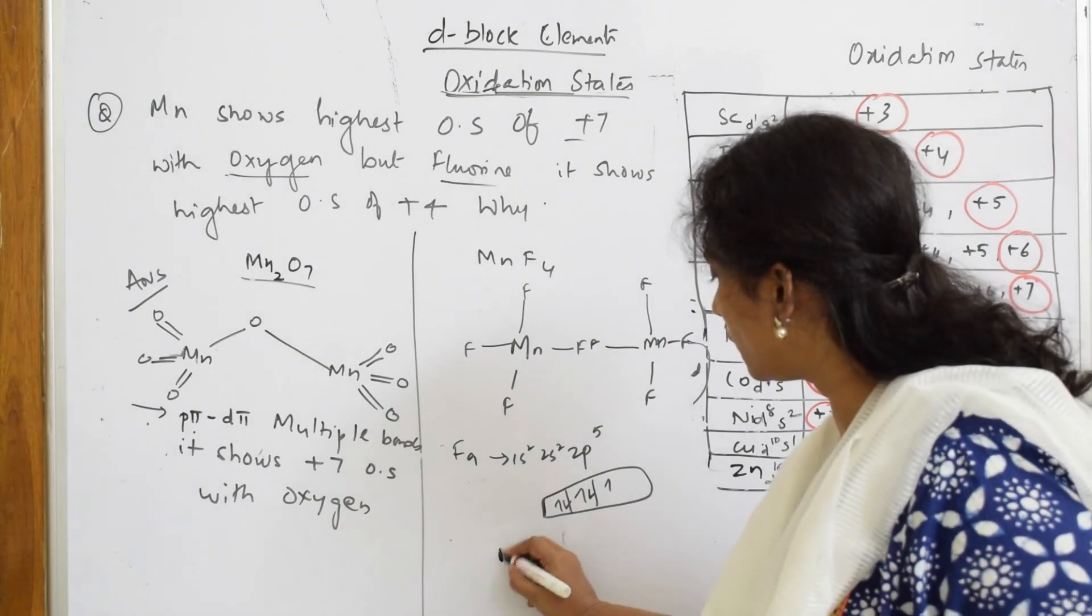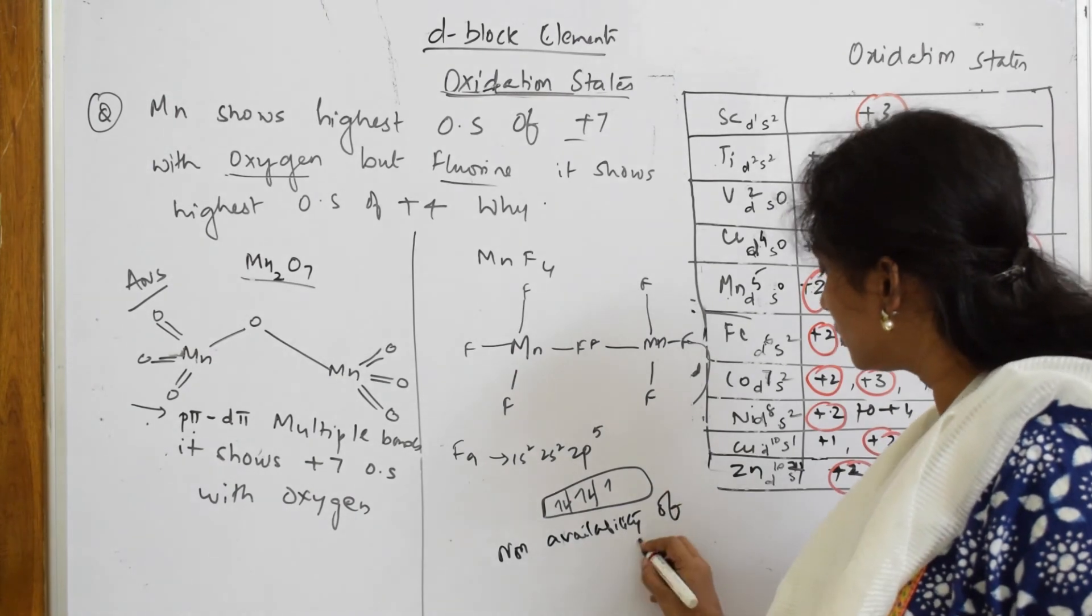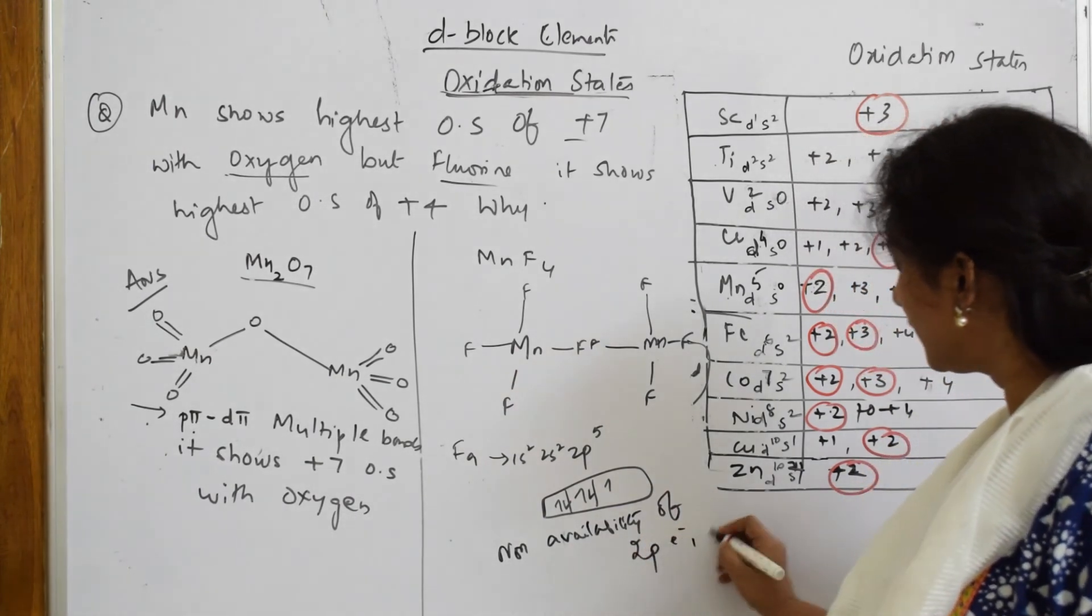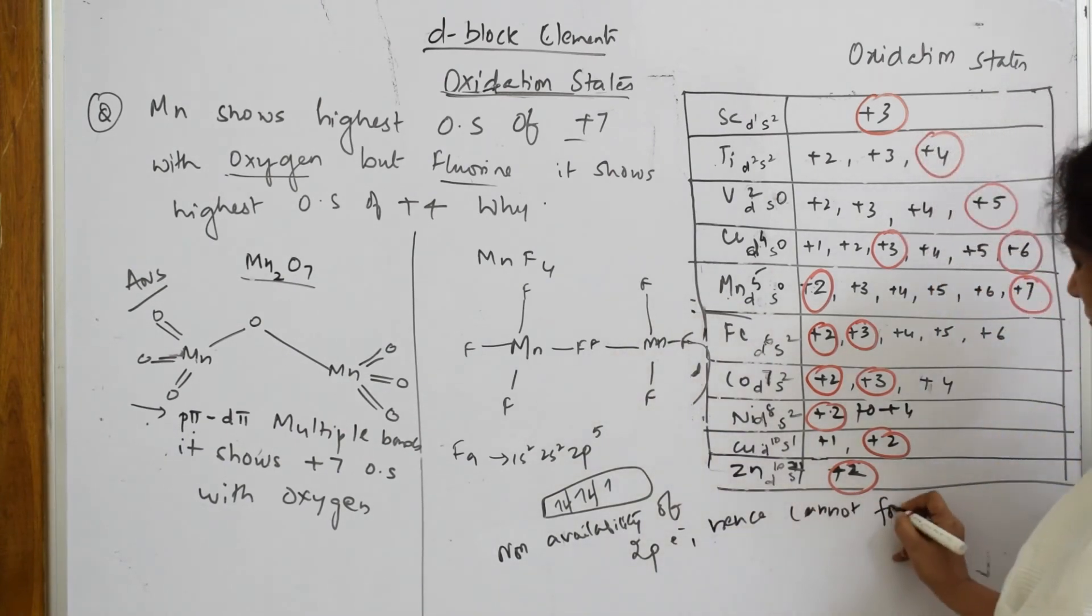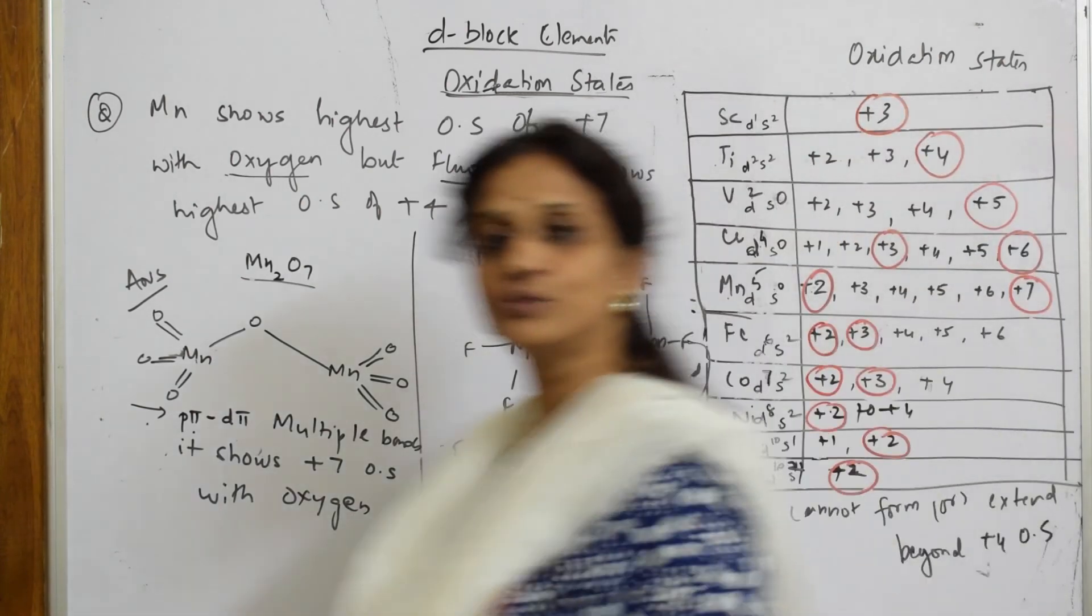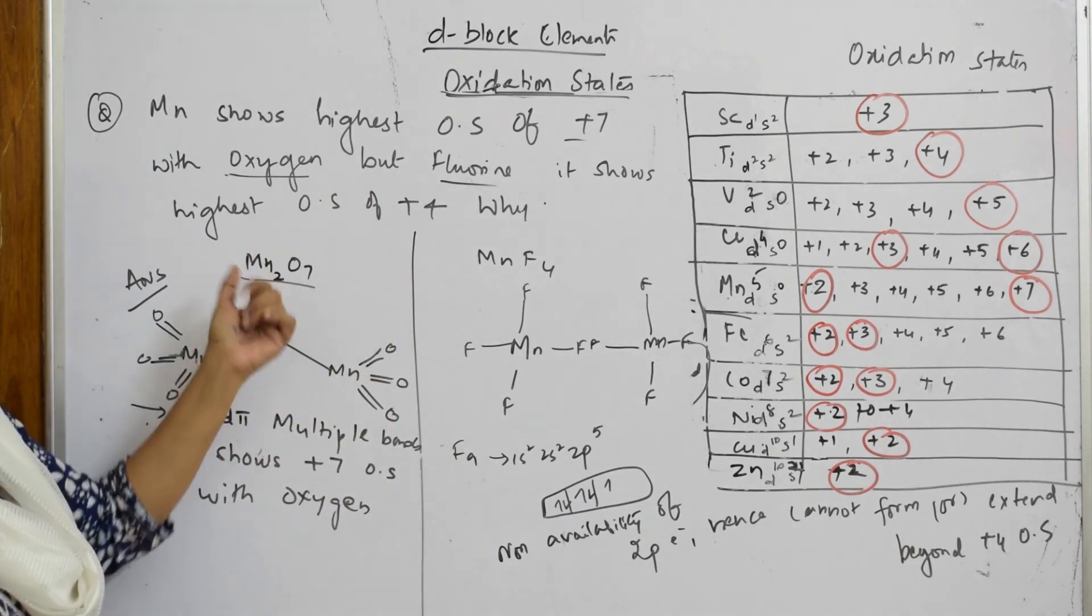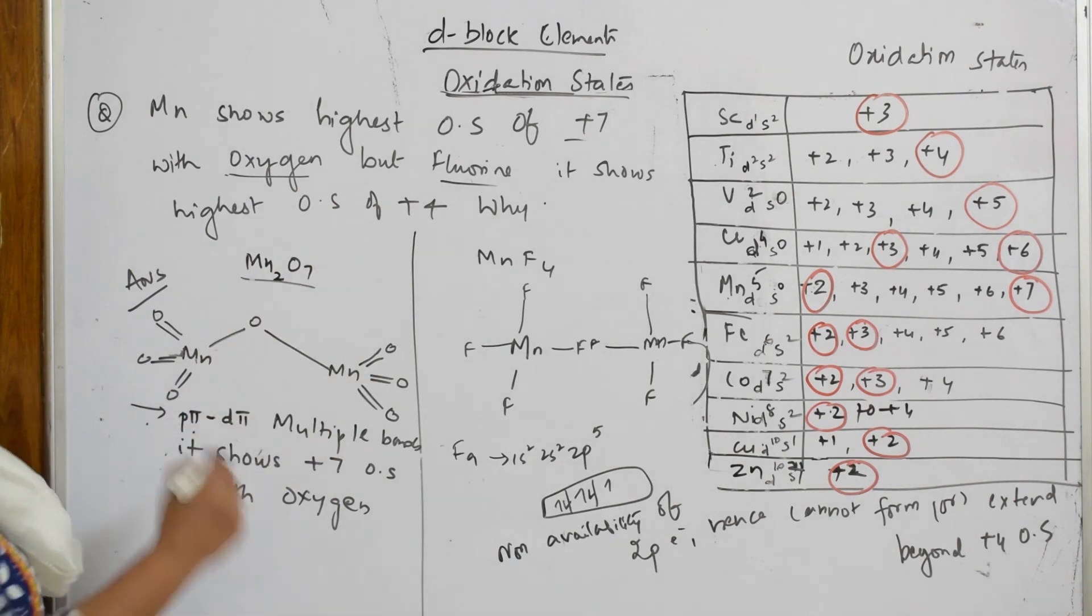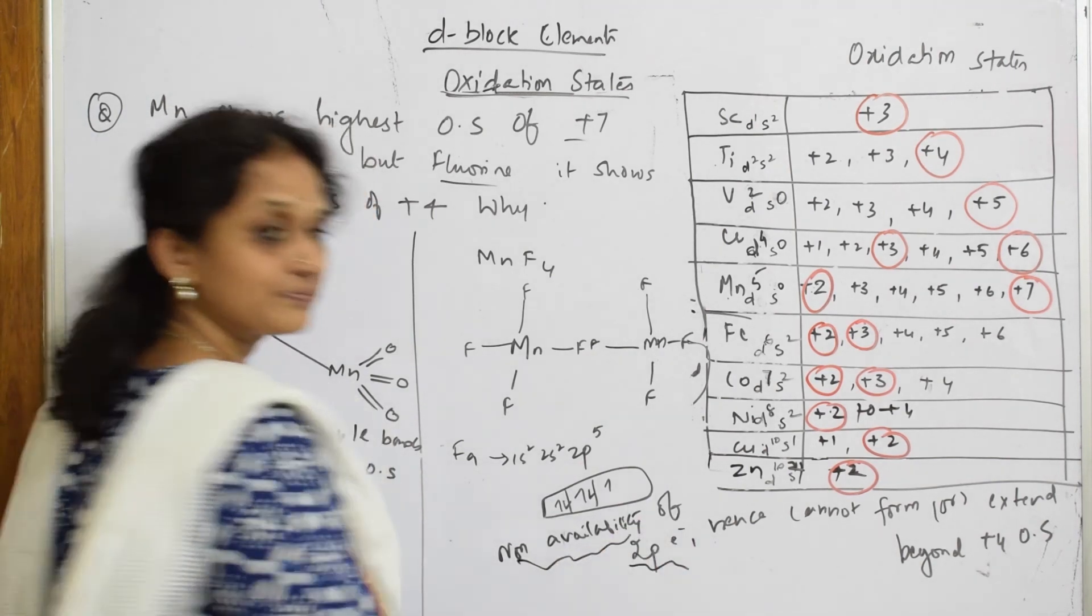No. Non-availability of 2p electrons, hence cannot form or extend beyond plus four oxidation state. This is the perfect way of answering the question. Whenever such a question arises, write the structures and explain, and highlight non-availability of 2p electrons. That's it.